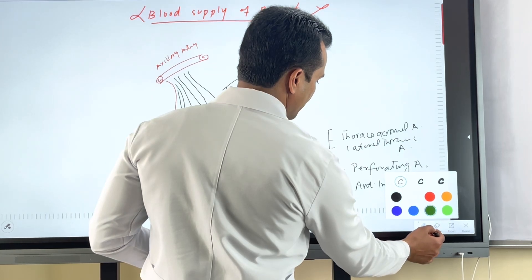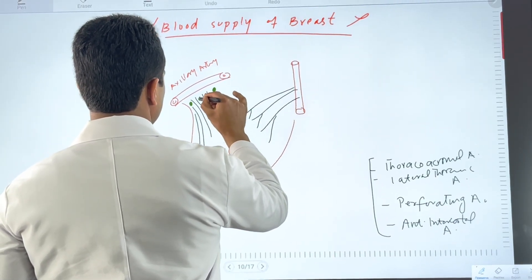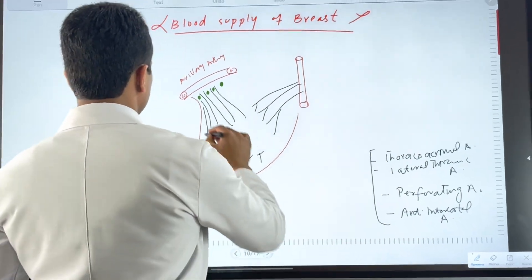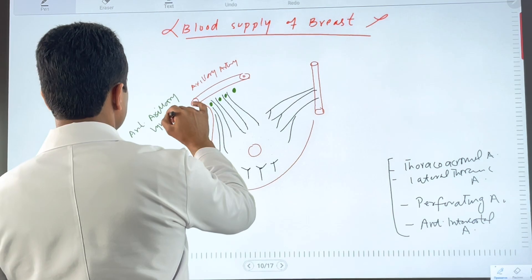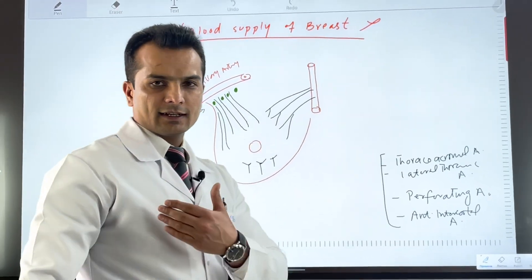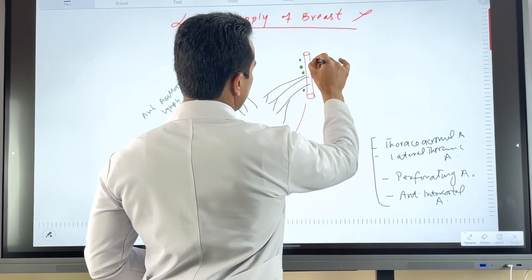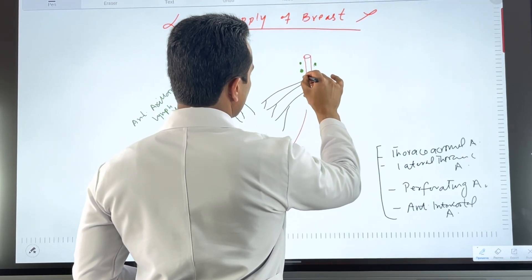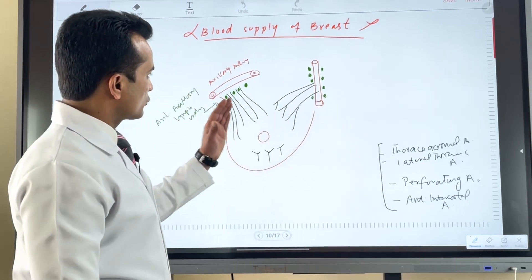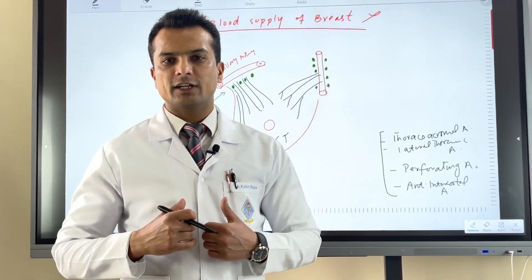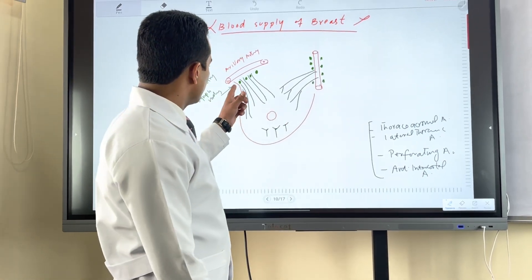Now let us discuss the lymphatic drainage of the breast tissue. The anterior axillary lymph nodes drain the outer and lateral quadrant of the breast. The medial side of the breast — the inner side — lymphatic drainage is carried by the internal thoracic lymph nodes, which are present alongside the internal thoracic artery. So the medial lymphatic drainage goes to internal thoracic lymph nodes, and the lateral and outer quadrant of the breast drains into the anterior axillary lymph nodes.